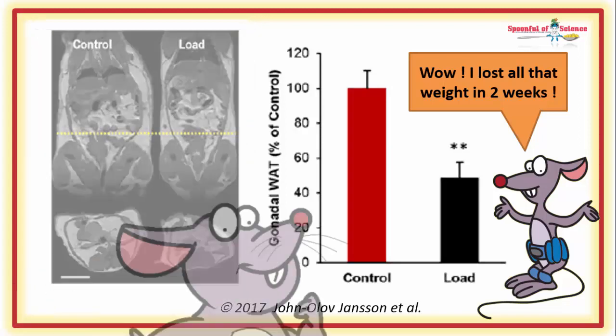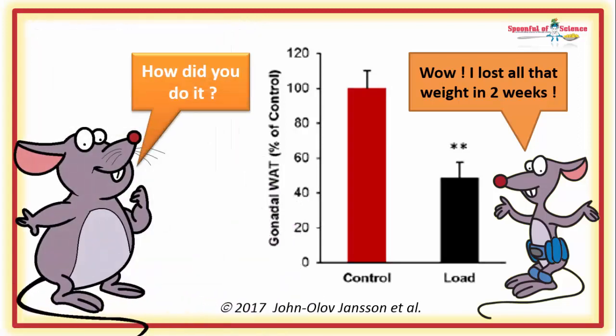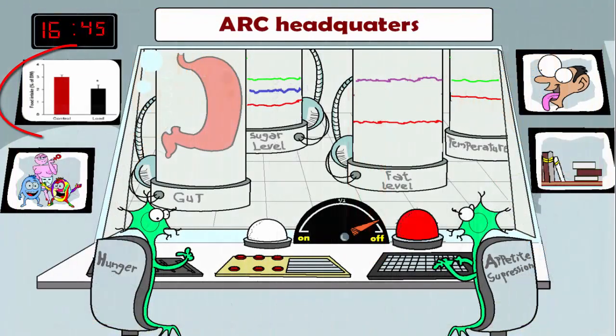Now curious, the team explored what exactly had precipitated the weight loss. And it turned out that the animals had eaten less. A lot less. Now at this stage, the chemical signal that sparked the weight loss is a mystery.